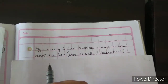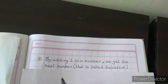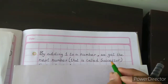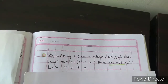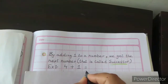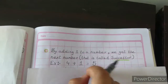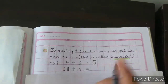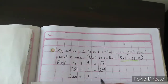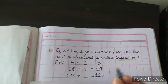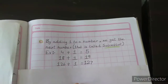The next addition fact is: by adding 1 to any number, we get the next number — that is, the successor. For example, 4 plus 1 equals 5, and 5 is the successor of 4. Similarly, 18 plus 1 equals 19, and 126 plus 1 equals 127. Whenever we add 1 to any number, the answer will always be the next number.